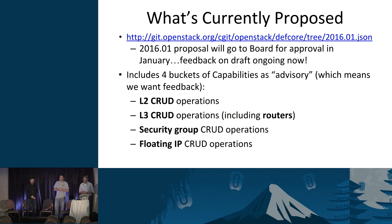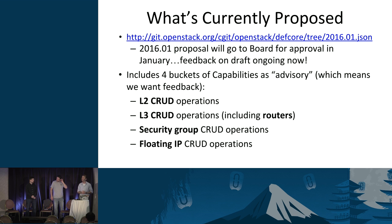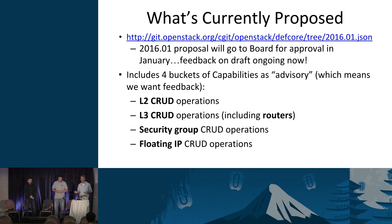Speaking of what's currently proposed, the link shown is to the spec just presented to the Board of Directors earlier this week — a proposed spec with four buckets of capabilities marked as advisory. There's basic L2 operations: creating, listing, updating, and deleting networks. Same for L3. We also include routers, which allow tenants to create routers and connect isolated L2 networks. We also have security groups and floating IPs. L2, L3, and security groups received pretty positive early feedback — people were mostly okay with those capabilities, with a little discussion about routers.